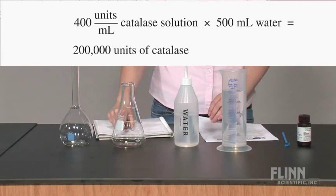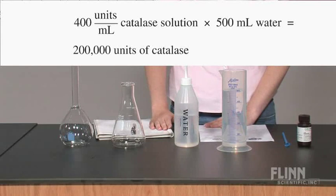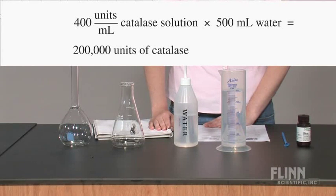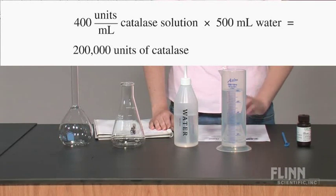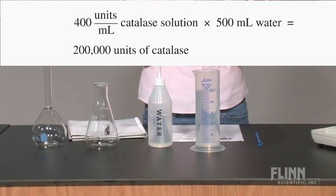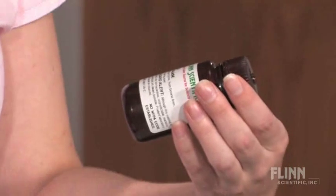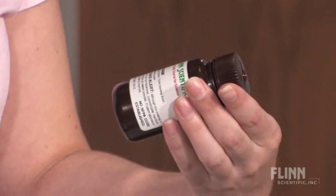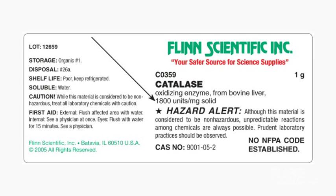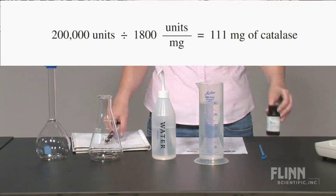Multiply the concentration of the desired catalase solution in units per milliliter by the total volume of the solution required. The units indicate the activity level of the enzyme. Locate the units per milligram on the catalase bottle. In the event that there are two values listed, use the smaller of the two numbers for your calculation.